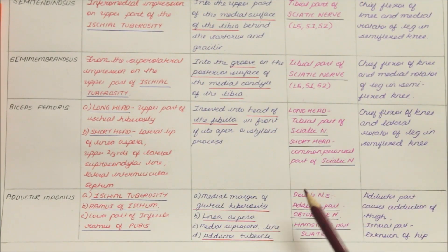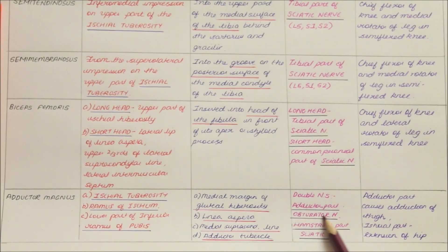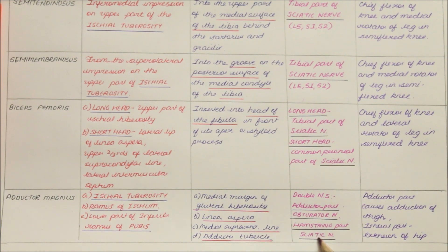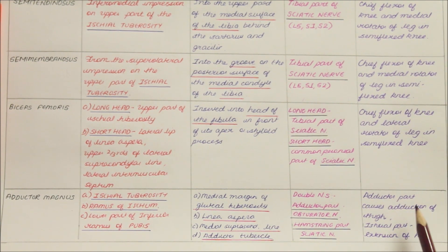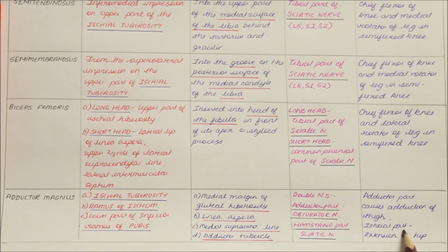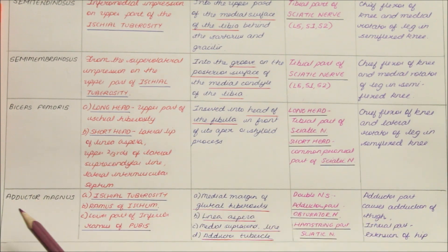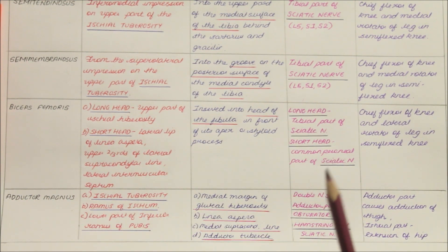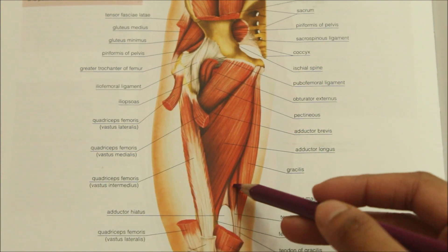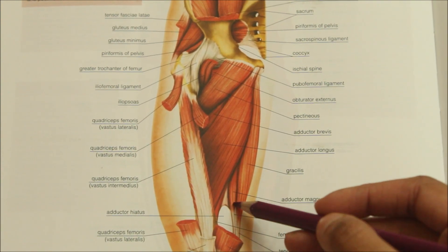The adductor magnus has a double nerve supply: the adductor part is supplied by the obturator nerve, while the hamstring part is supplied by the sciatic nerve. Its action is that the adductor part causes adduction of the thigh, while the ischial part causes extension of the hip. Please note that the adductor magnus is also a muscle of the medial side of the thigh.